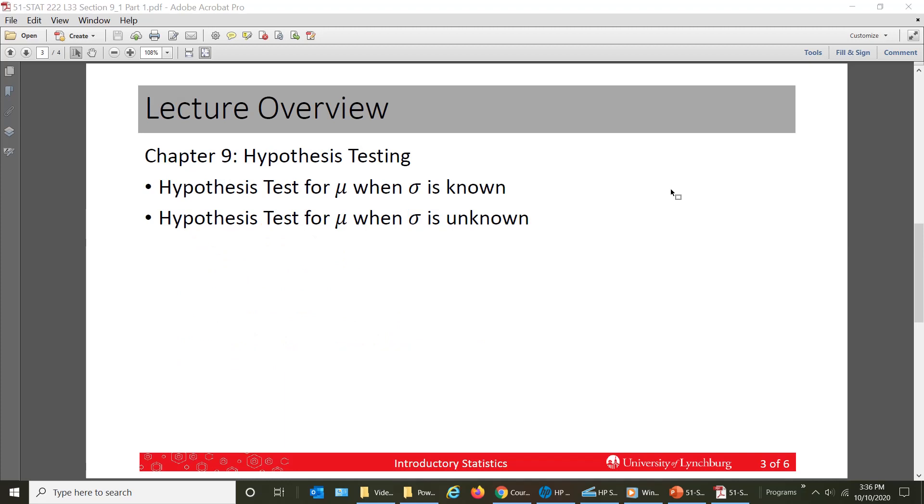In chapter 9, we are going to talk about how to do hypothesis tests for the mean, the population mean, first when we know what sigma is, which is not often in real life, and then the more realistic case, which is section 9.2, we're going to learn how to do a hypothesis test for the mean when sigma is not known. And again, we'll have to use the t test statistic for this. So I hope you enjoy these previously recorded videos that move at a slower pace.